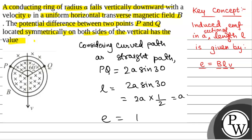The induced EMF E will be equal to BL into V, and L is A, so that will be BV into A. This will be the induced EMF and that will be the potential difference.